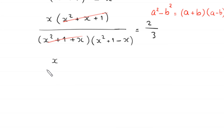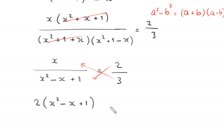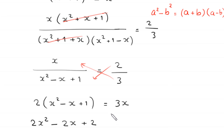From here we use cross multiplication: 3 times x equals 2 times (x squared minus x plus 1). Expanding: 2x squared minus 2x plus 2 equals 3x. Moving 3x to the left hand side gives 2x squared minus 2x minus 3x plus 2 equals 0.